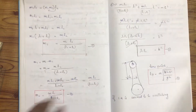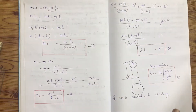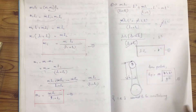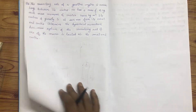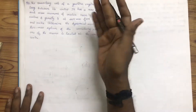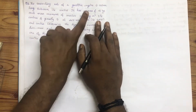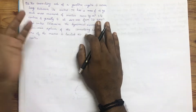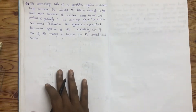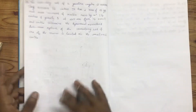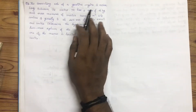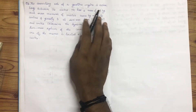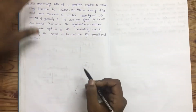Let's learn the dynamic equivalent system. The connecting rod of a gasoline engine is 350mm long between its centers.